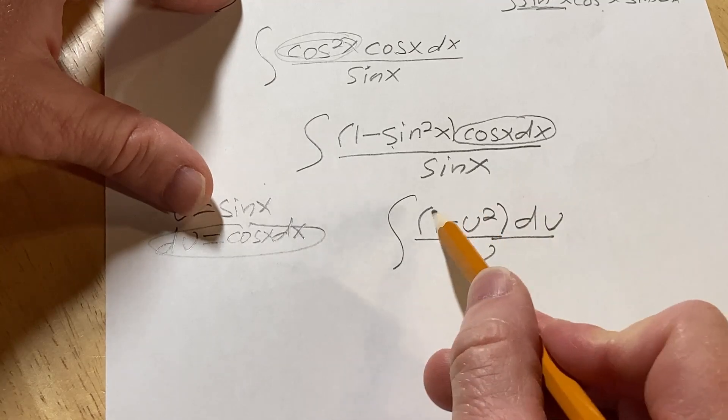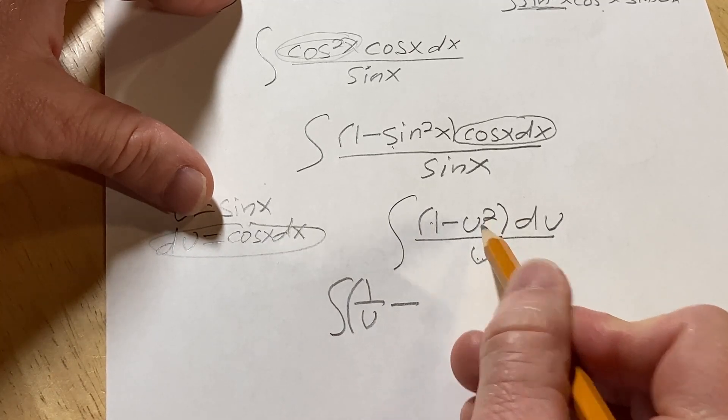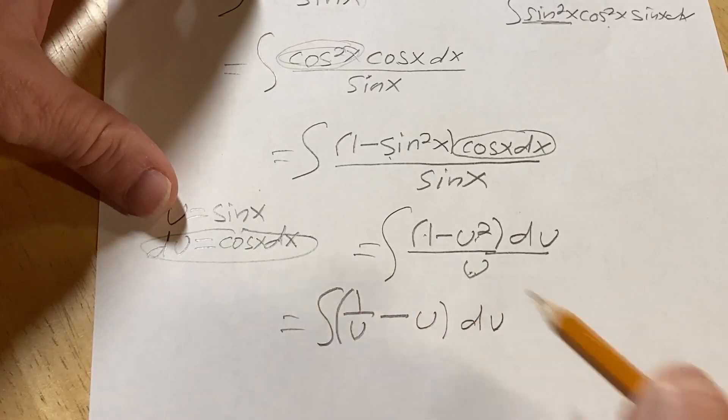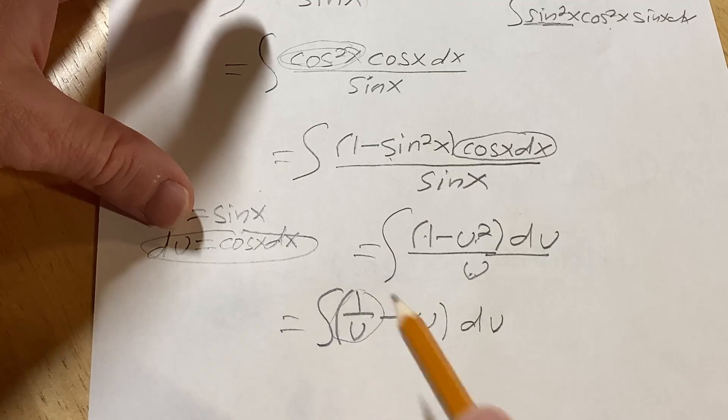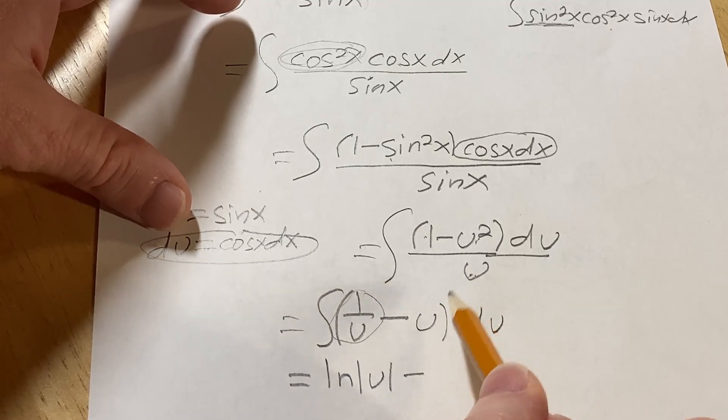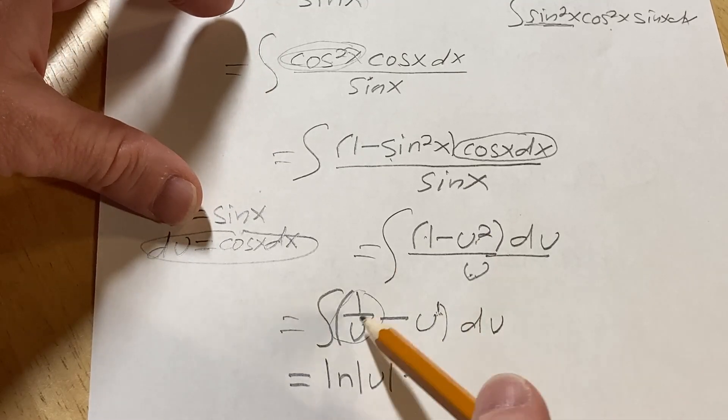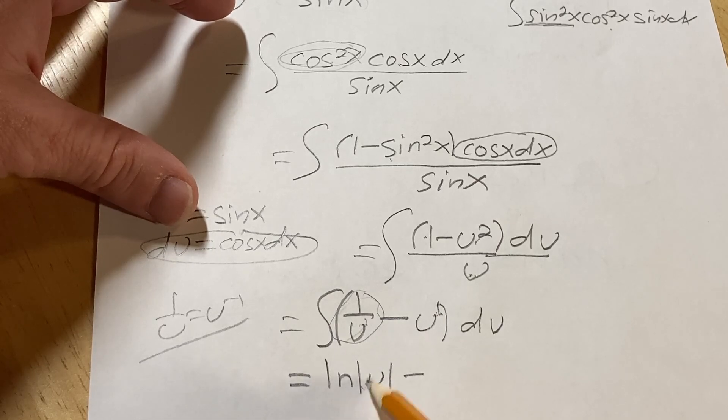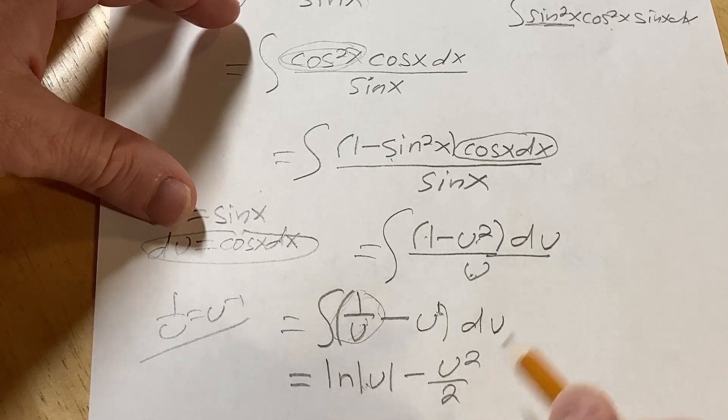Now we can break this up even further, right? You can do 1 over u minus u squared over u. U squared over u is just going to be u du. And then now we integrate. This is a formula that is familiar, perhaps. If not, I'll tell you what it is. This gives you the natural log of the absolute value of u minus, and then here we can use the power rule. So basically you look at the exponent. This works as long as the exponent is not negative 1. If the exponent is negative 1, you use this formula. If it's not negative 1, you use the power rule. So you add 1 to the exponent and divide by the result, plus c.